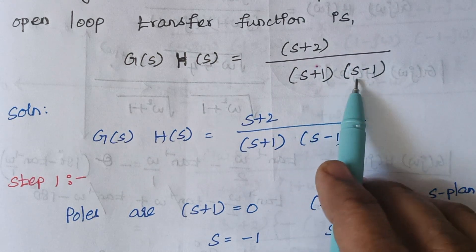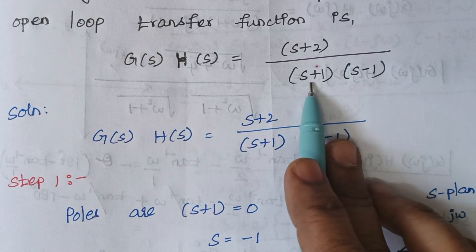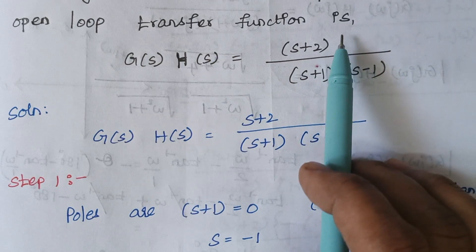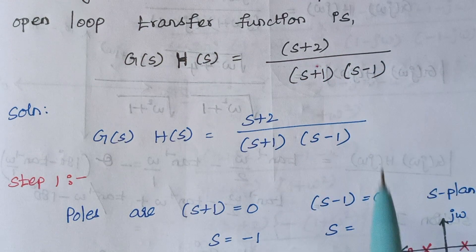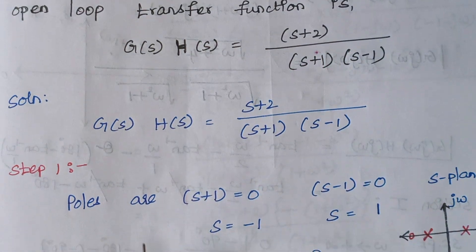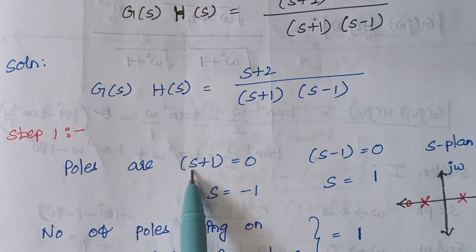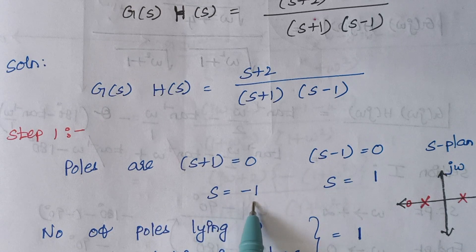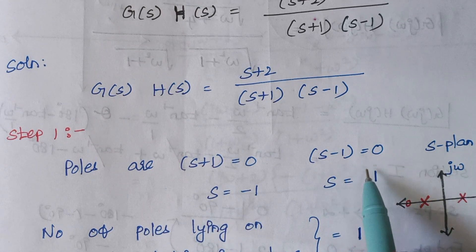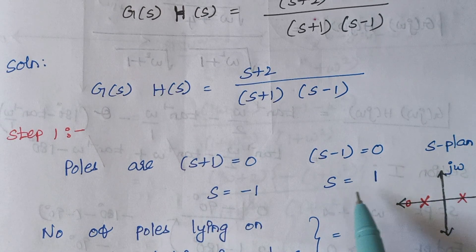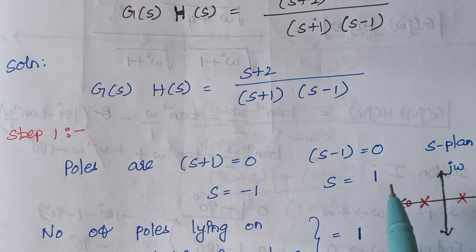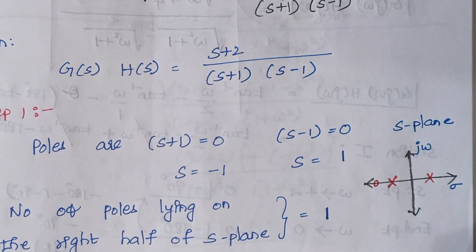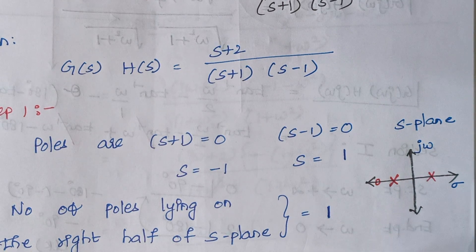Here we are having two poles: one is s plus 1 and another one is s minus 1, and the value of the zero is s plus 2. Now we are calculating the pole values. s plus 1 equals 0, therefore s is minus 1; and s minus 1 equals 0, therefore s is plus 1. This is our s-plane and now we are going to mark these pole values.